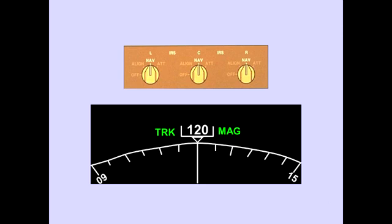When alignment is complete, the IRS enters the navigation mode. The IRS will now provide valid signals. The NAV mode is most evident when heading information is displayed on the navigation display.